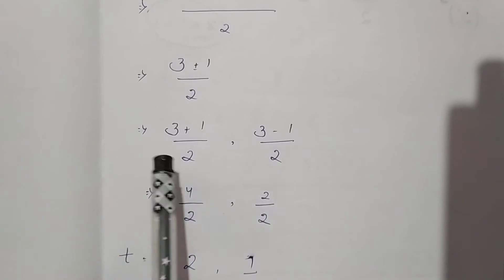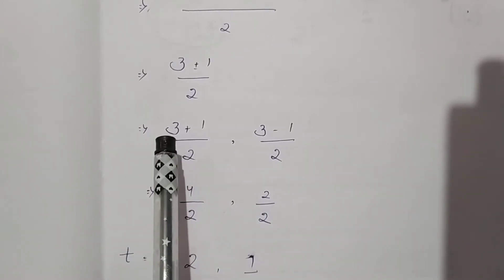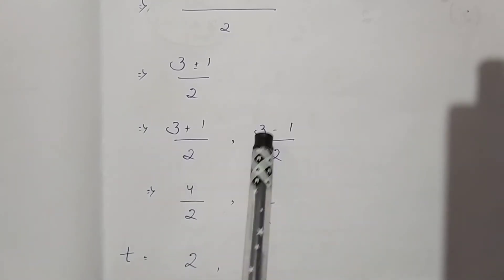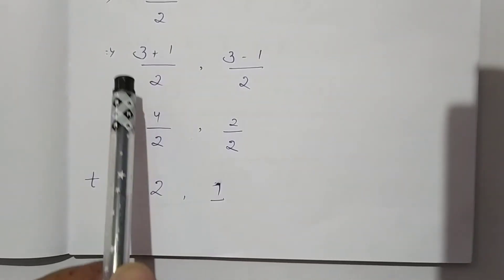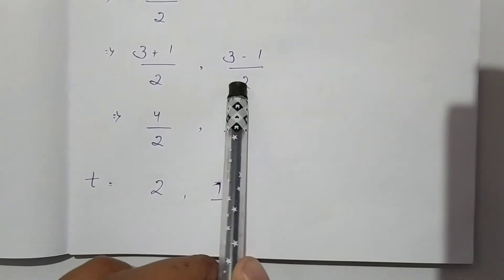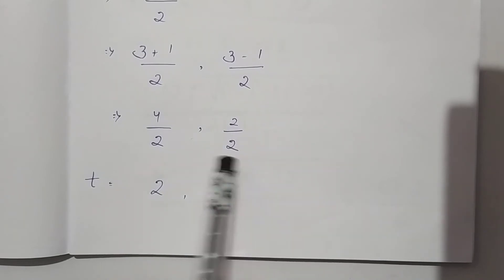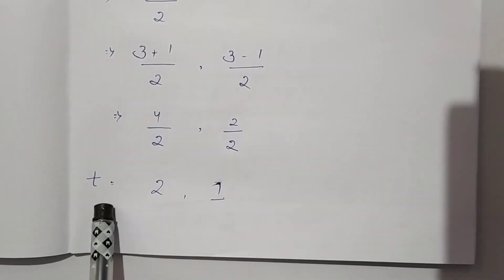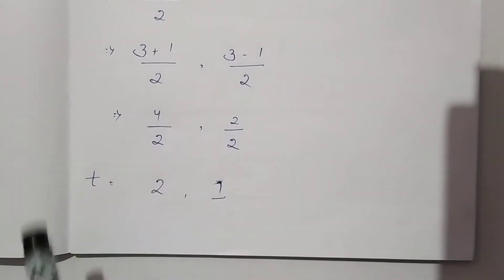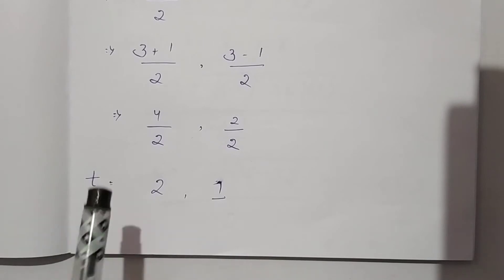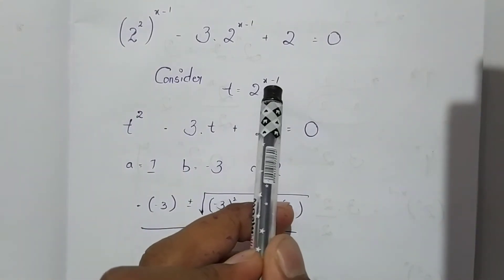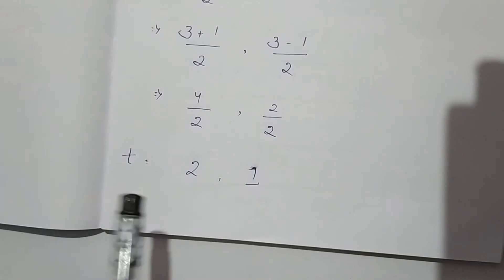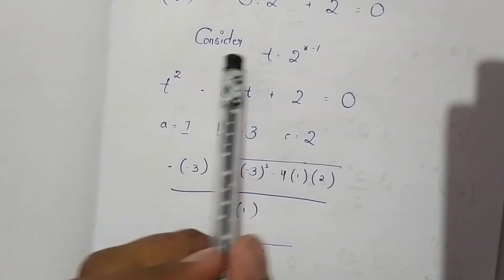Since 9 minus 8 equals 1, we get 3 plus or minus 1, divided by 2. This gives us two values of t: (3 + 1)/2 = 4/2 = 2, and (3 - 1)/2 = 2/2 = 1. So the two values of t are 2 and 1. We will substitute t = 2 to get the first value of x, then t = 1 to get the second value of x.